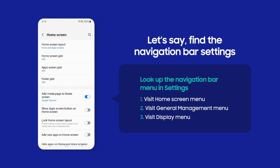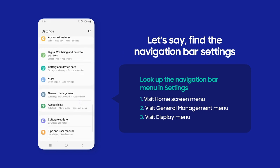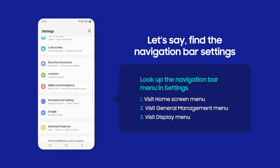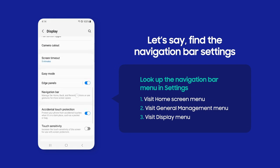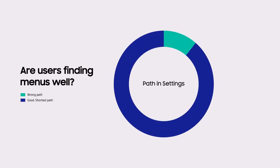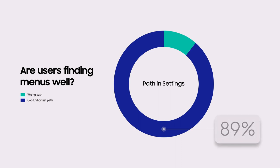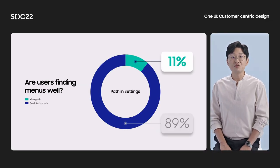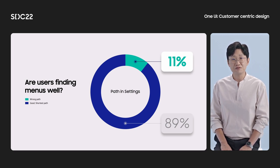Before we look at the second data analysis, let's see a video where users try to look for menus in the settings app. The user looked up the navigation bar menu in the settings app. He visited several places to find the menu, and it seems he had a hard time guessing where the menus were. Looking at this chart, we found that 89% of the time users moved along the optimal or shortest path. 11% of the time users were getting lost, unable to find the optimal path. Most users are able to locate the shortest path to find the menu they want, but we want all menus in settings to be easily discoverable, even for the 11% of situations where users couldn't find the menu.